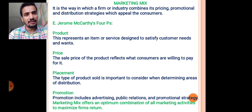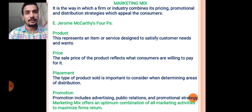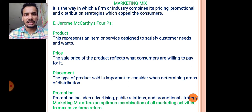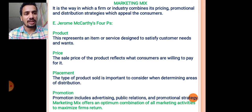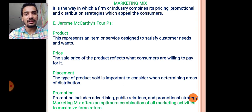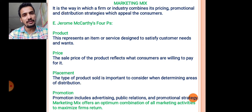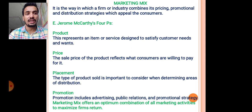The first P is product, second is price, third is placement, and fourth is promotional. Product means any commodity, item, or service designed to satisfy a customer's needs and wants. That is the first P. The second and most important is price.